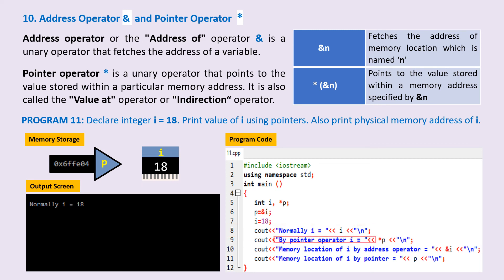On line 9 it says print the value within memory location that the pointer p is pointing to. p is pointing to variable i. So here, the value of i is printed.